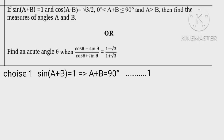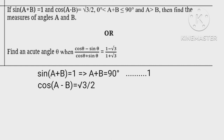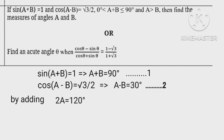sin(A + B) equals 1 implies that A plus B equals 90 degrees. Similarly, cos(A minus B) equals root 3 upon 2 implies that A minus B equals 30 degrees. Adding the two equations we get 2A equals 120 degrees, hence A equals 60 degrees.